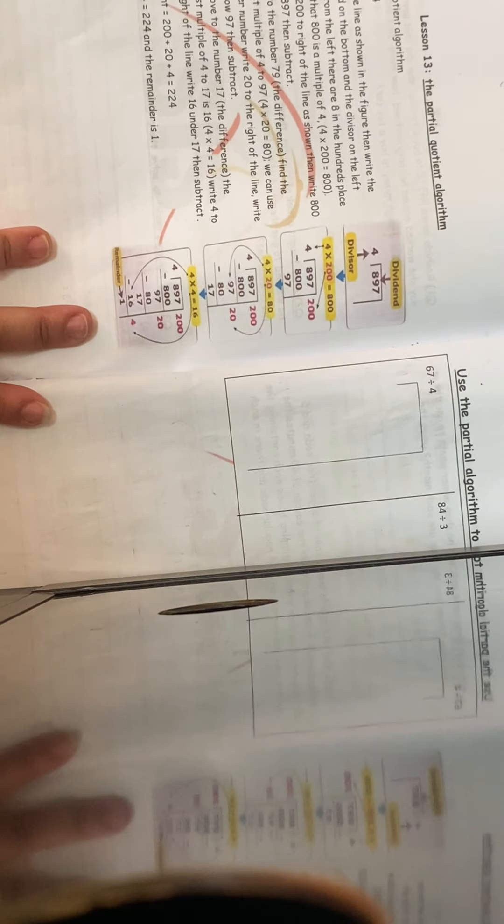Good morning, Junior 4. Today we are going to explain lesson 13 in unit 7, which is the partial quotient algorithm. How can we do this lesson? We are in page 57.